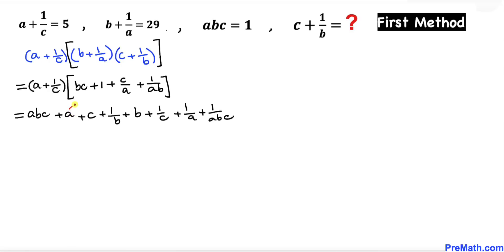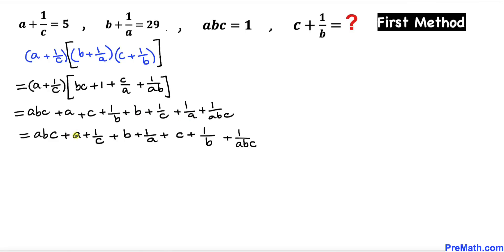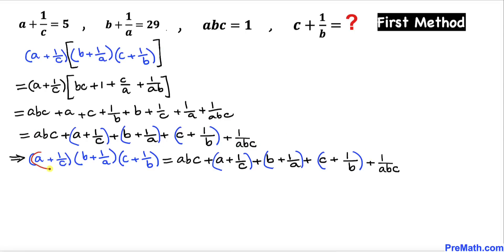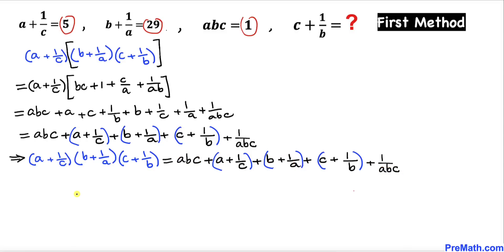Let me rearrange — I'm going to put a and 1 over c together, and likewise b and 1 over a together. I put parentheses around a plus 1 over c, and likewise parentheses around b plus 1 over a. Now I have written the left-hand side equal to the full right-hand side. We can see that a plus 1 over c equals 5, b plus 1 over a is 29, and a times b times c is 1.